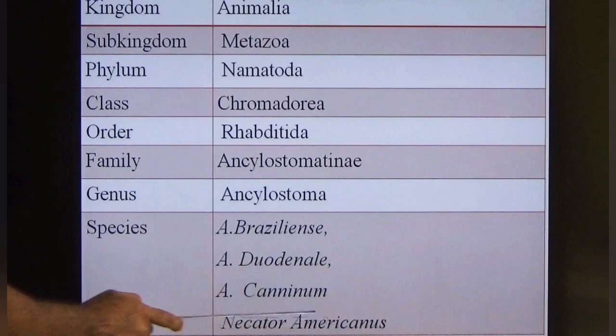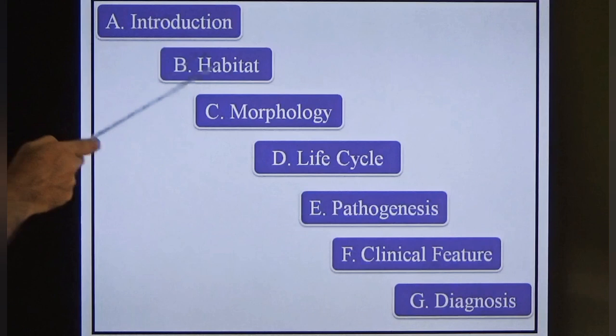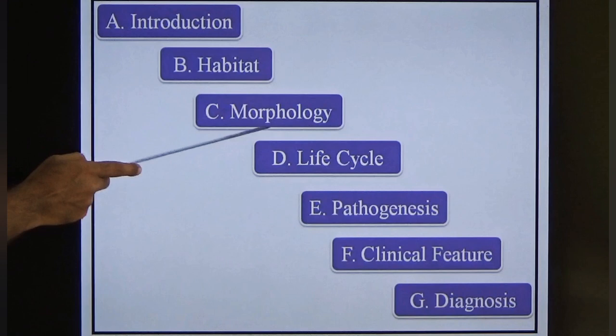Today we are discussing about a detailed description of Ancylostoma duodenale under seven headings: introduction, habitat, morphology, life cycle, pathogenesis, clinical features, and diagnosis.